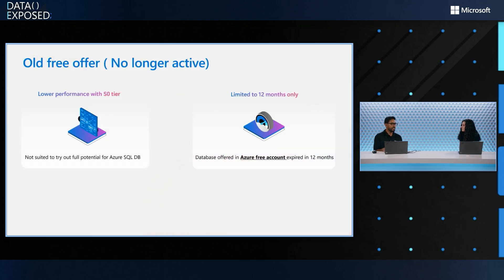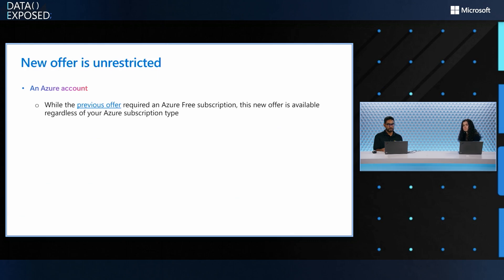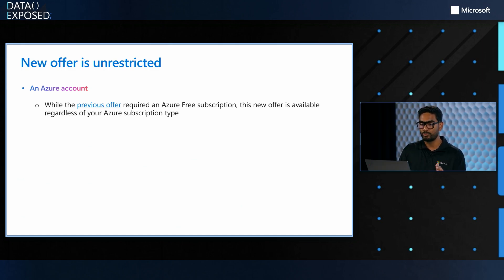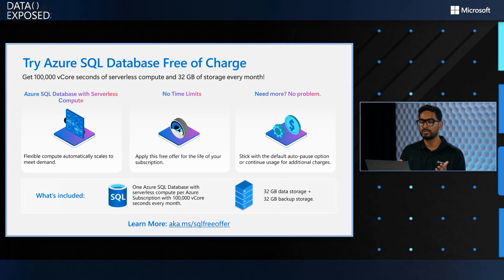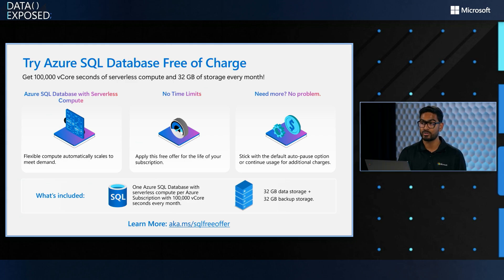The old offer was pretty restrictive — it had a limited effectivity of 12 months, restricted performance, and you had to have an Azure free account subscription. The new offer is completely unrestricted in that regard. It works on the latest serverless tech, and you don't need an Azure free account subscription. You get one free database per subscription for the lifetime of the subscription, with 100,000 vCore seconds of compute every month, 32 gigabytes of data storage, and 32 gigabytes of backup storage.